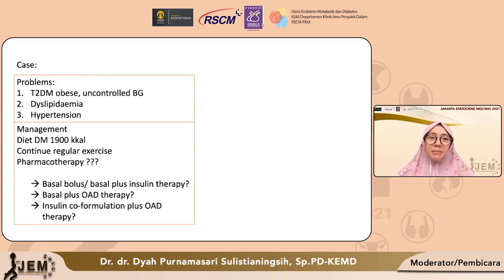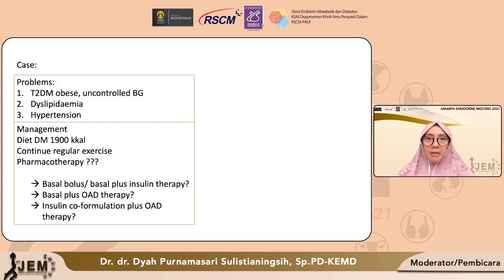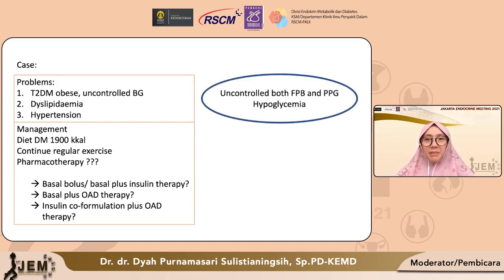Pasien diberikan diet diabetes 1900 kalori dan disarankan untuk melanjutkan olahraganya. Lalu bagaimana cara kita mengelola obat anti diabetesnya? Kita tahu bahwa pada pasien sudah masuk indikasi untuk diberikan terapi injeksi, karena dengan penggunaan obat oral 4 macam dengan dosis yang hampir optimal, masih belum bisa mencapai target glikemik.